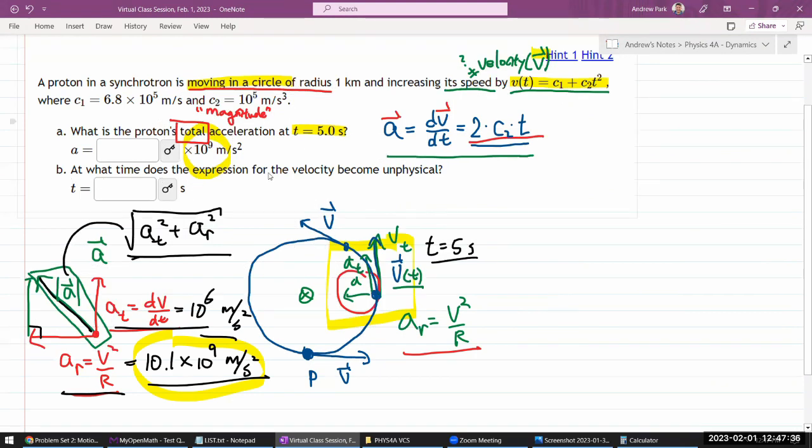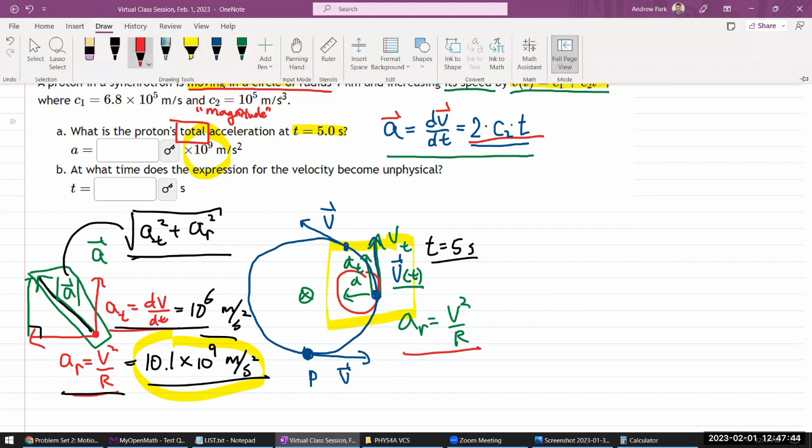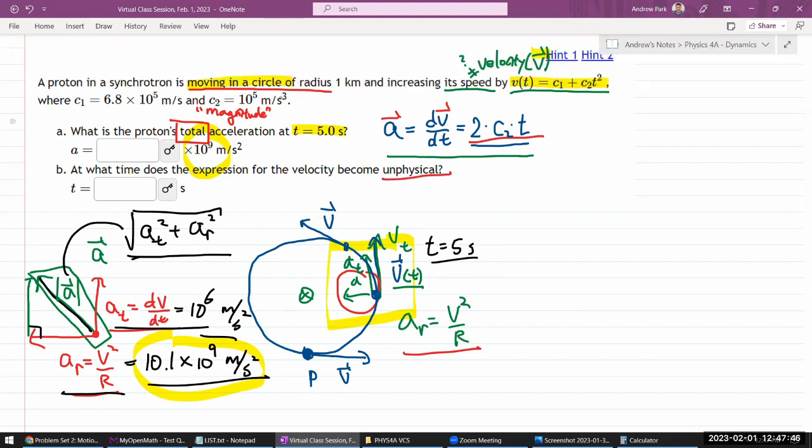Really, what it's getting at, and I think the hint mentions it, what it's getting at is this. We have, there's a universal speed limit. Speed of anything with a mass, it cannot be greater than speed of light C, which is 3 times 10 to the 8 meters per second. So, I'm just going to look for when this speed here will become 3 times 10 to the 8 meters per second.